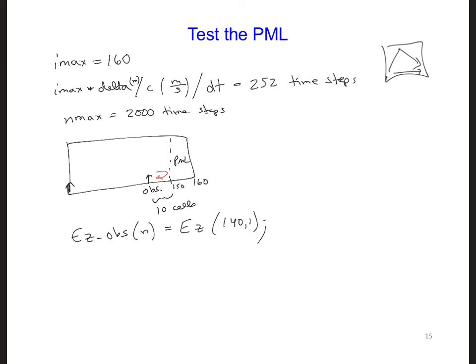So go ahead and save your output for this smaller run where Imax is just equal to 160 so that we can run the code a second time to represent the larger grid.